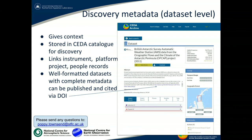On the right here we have an example of a catalogue record from our catalogue. It shows you that for this dataset we have the title, we have an abstract giving the description of the project. On the right-hand side we have the geographical and temporal information. Below that we have the authors, and on the left-hand side there are links to all the other information about this dataset — links to the instruments, people, platforms, projects, etc.